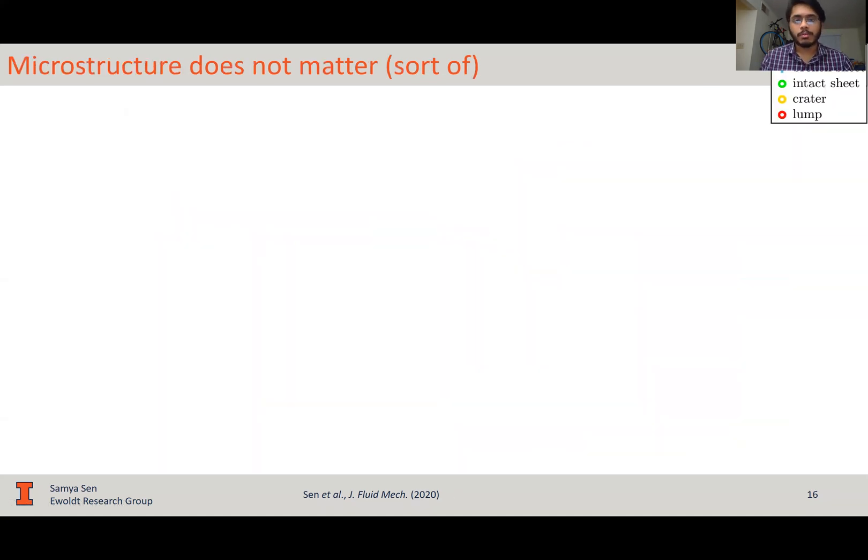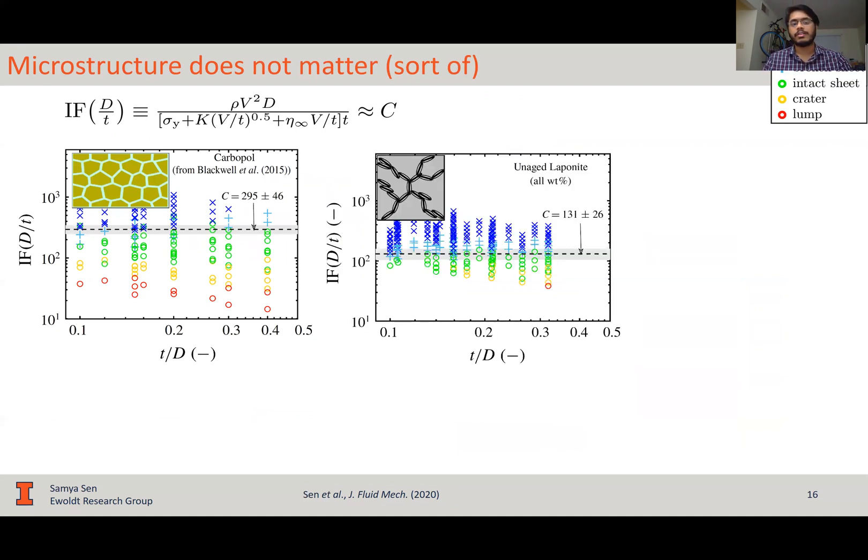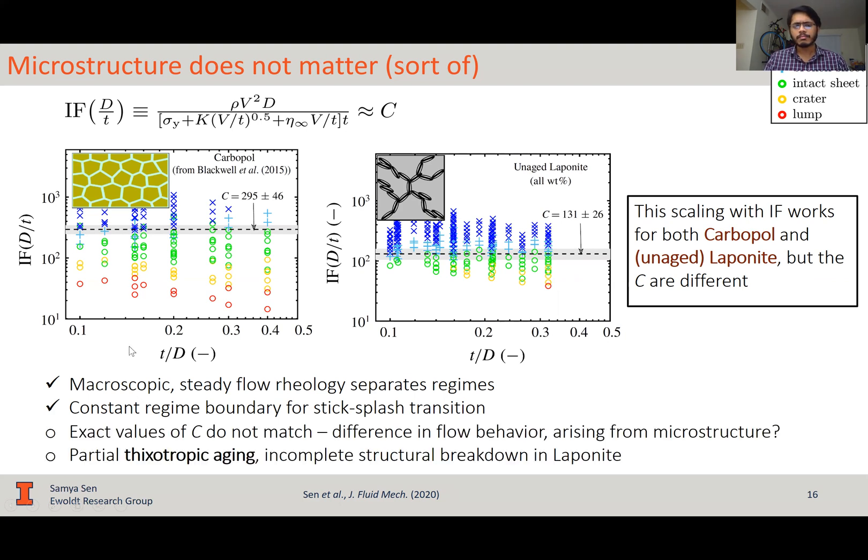Now, we did this for laponite and carbopol. The carbopol results are from a previous work by Blackwell and co-workers, and we compared this result to what we obtained currently for laponite. As we can see, for both the fluids, despite them being very distinct microstructurally, the dimensionless group works really well. The impact regimes are separated into separated areas, and there's a constant regime boundary for a stick to splash transition. But the only problem is that the values of c are different between the two fluids. So, if you remember, these two are microstructurally different yield-based fluids. So, despite the fact that the dimensionless group has these two good features, the exact values of c do not match. So, difference in flow behavior may as well rise from a difference in microstructure.